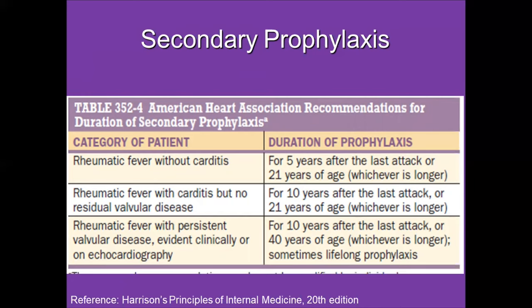The duration of prophylaxis depends on the clinical situation. For rheumatic fever without carditis, prophylaxis is for 5 years after the last attack or until age 21, whichever is longer. If the patient has carditis but no residual valve disease, prophylaxis should continue for 10 years after the last attack or until age 21, whichever is longer. Very high-risk patients may require lifelong prophylaxis.